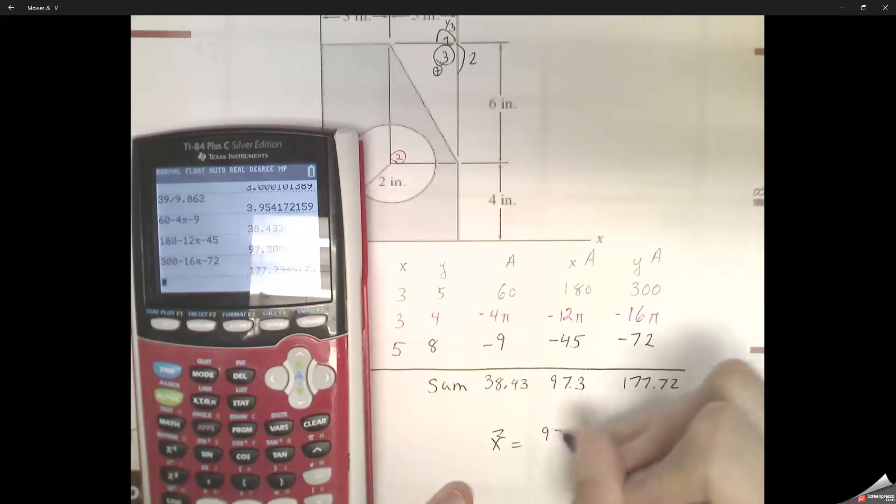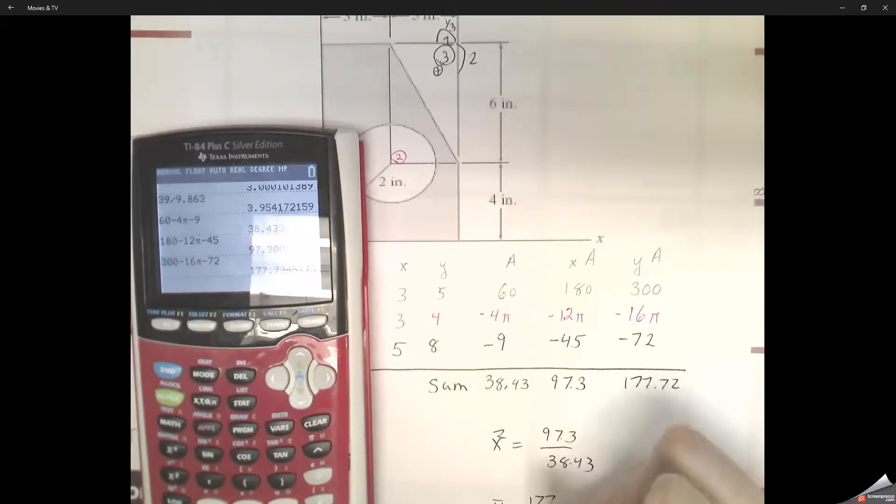So to find the final centroid value, we take the sum of the axis times areas divided by the sum of the areas. We take then for the y value, sum of y times the areas divided by the areas.